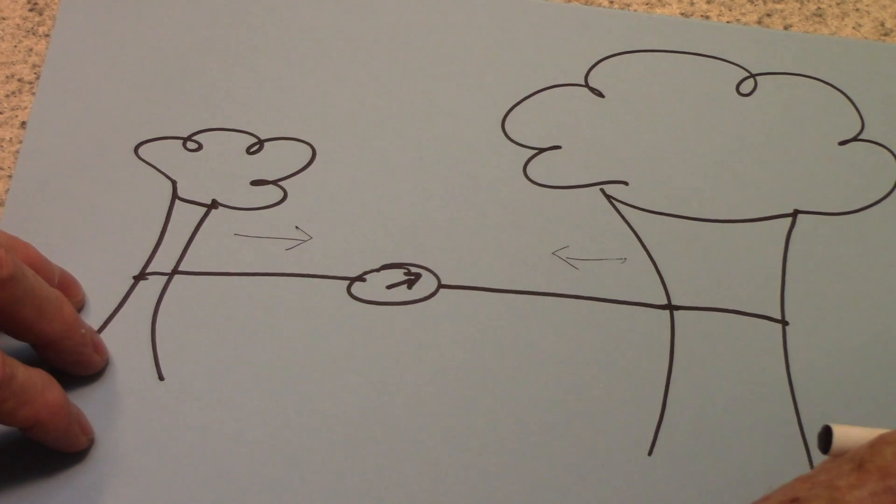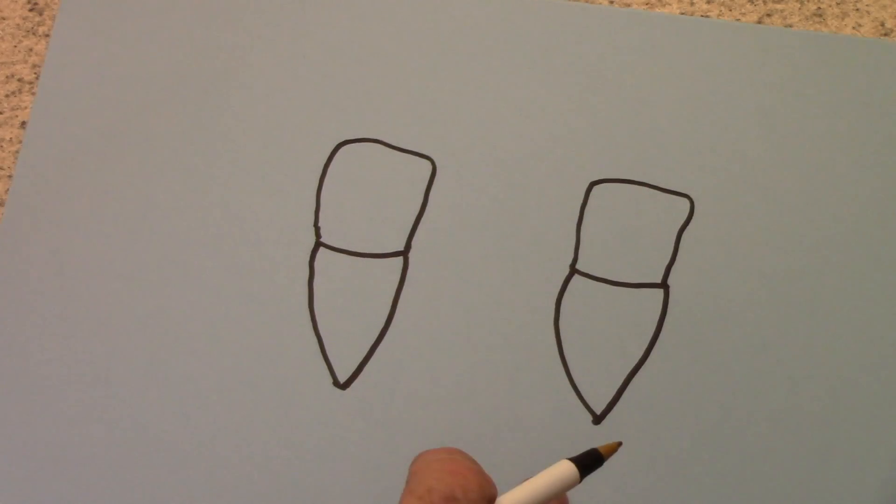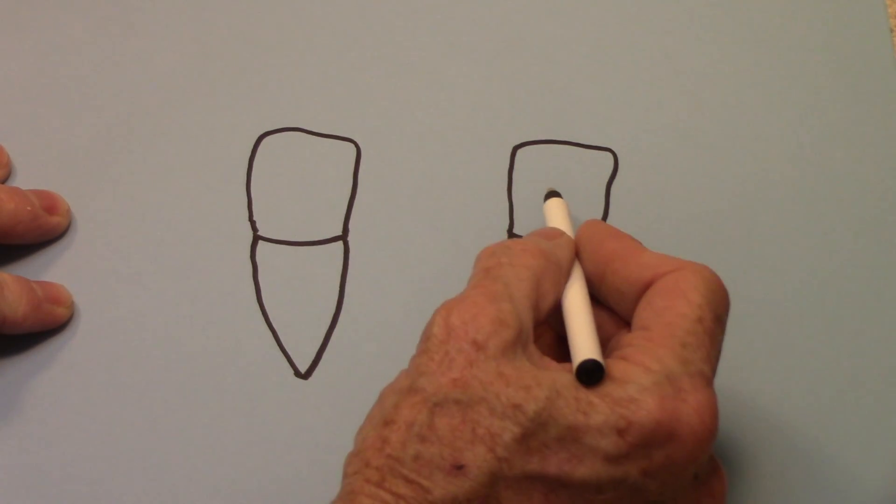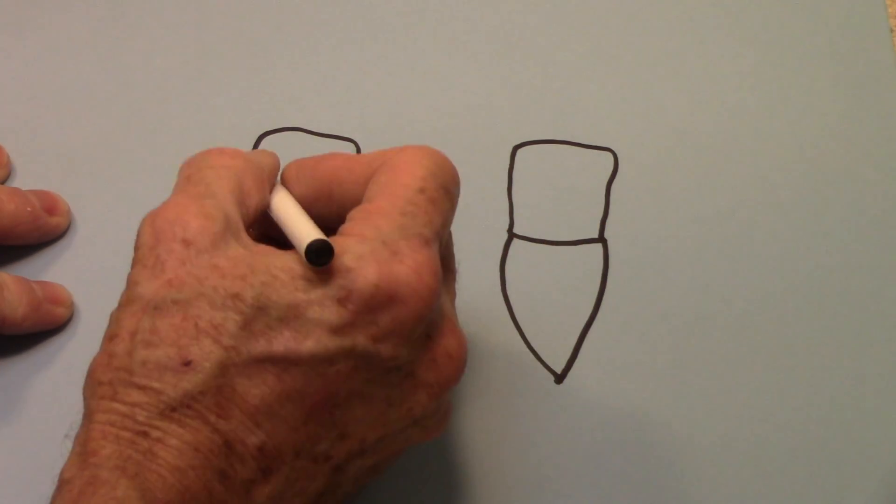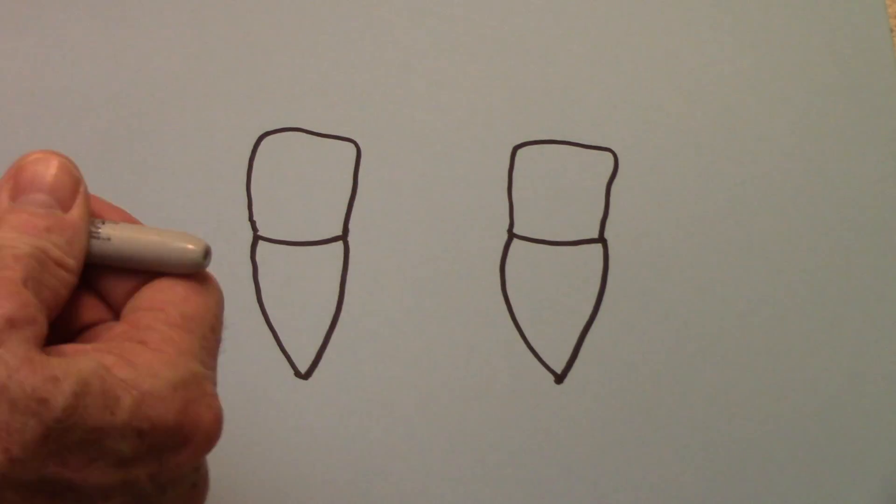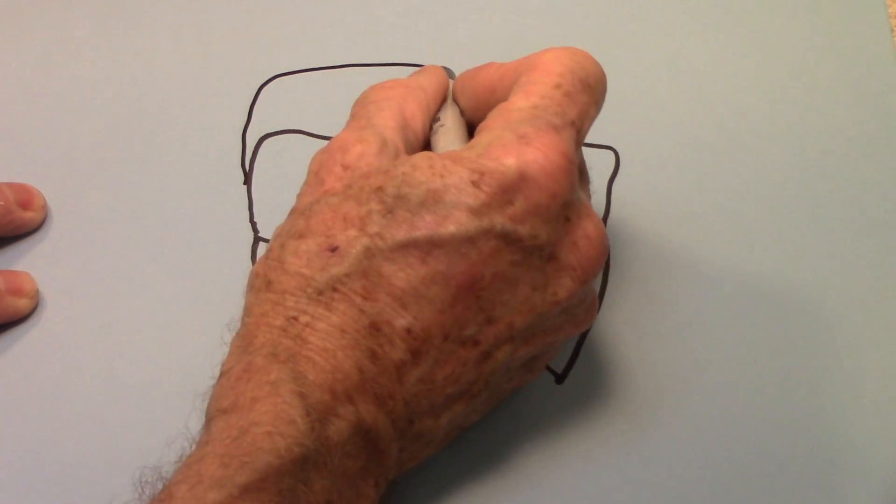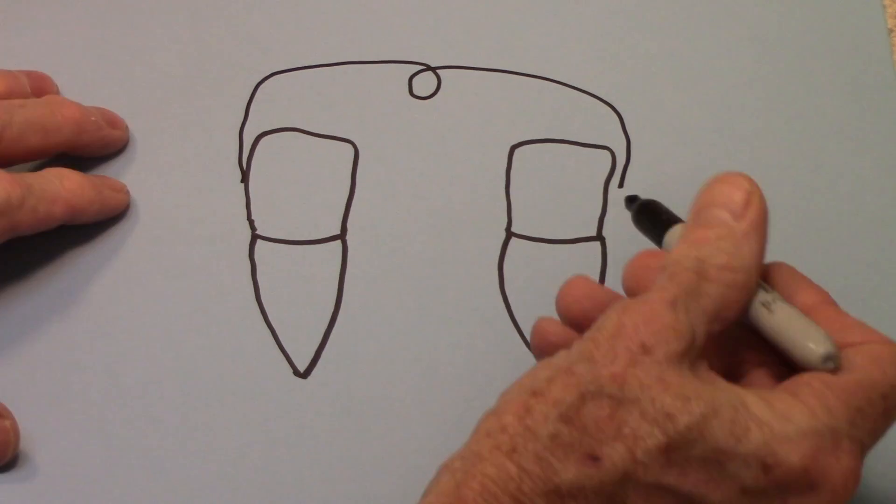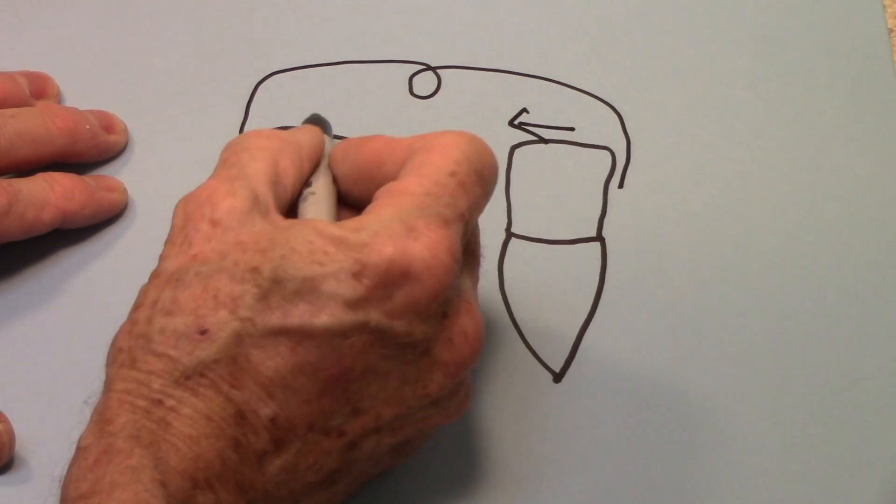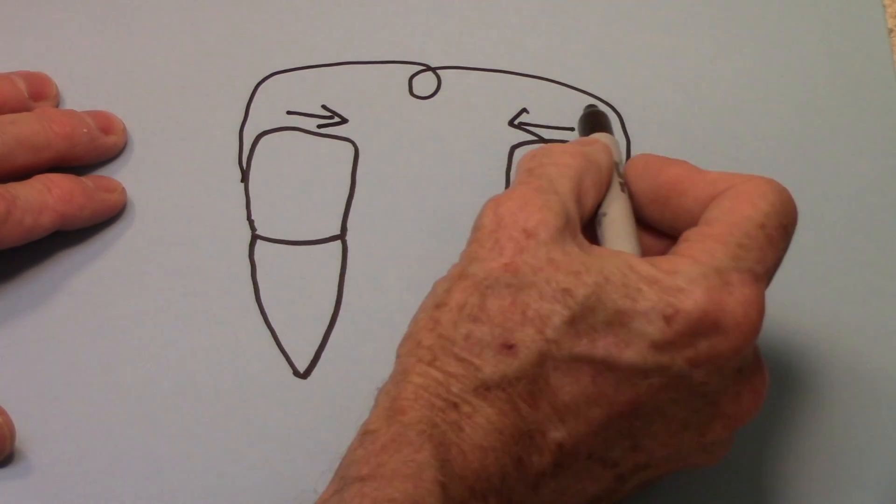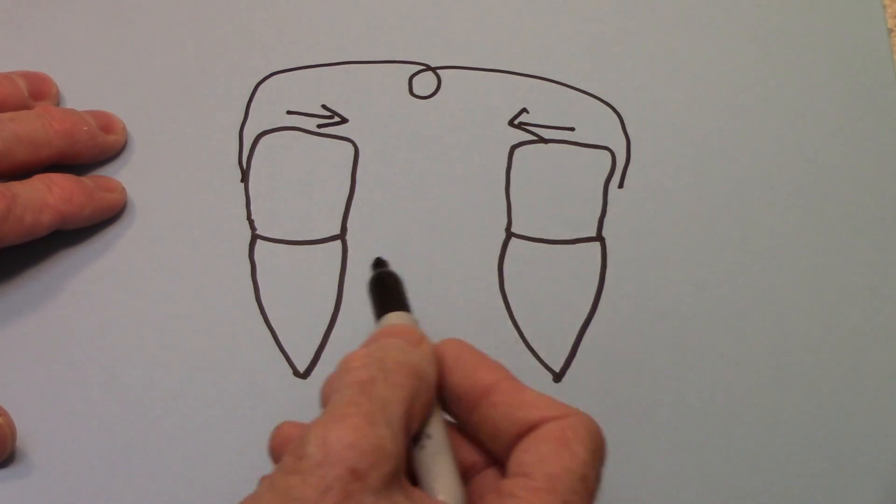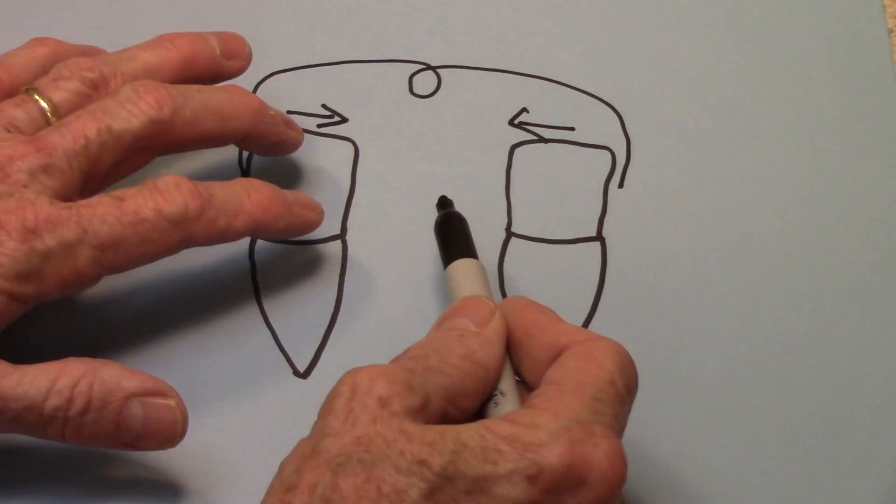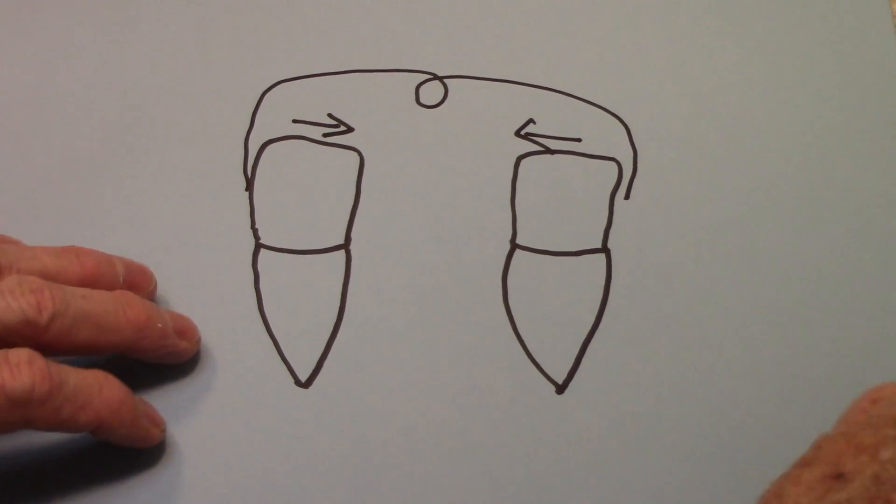Now, this same thing in dentistry: let's say we have two incisors, and we're going to do some kind of appliance that's going to close the space between these two incisors. Let's say we have something like a spring that has a helix here, and we're going to close that helix and cause a force to go this way, and it's going to be an equal force this way. You're not going to have a greater force on one side than the other. They're going to be equal, and since these teeth are approximately the same size, they're probably going to come together at the same rate.